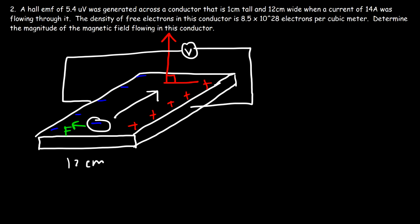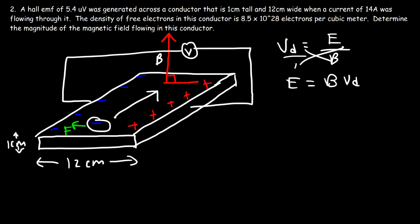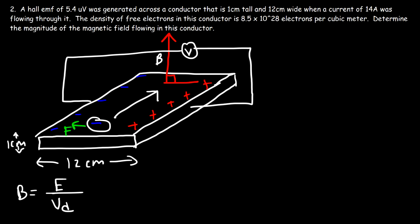We can connect a voltmeter across the conductor. The width is 12 centimeters and the thickness is 1 centimeter. To find the magnetic field, we use the relation v_d = E/B, which gives E = B × v_d, so B = E / v_d. The electric field E equals the Hall EMF divided by the width W, and the drift speed can be calculated using v_d = I / (NqA).